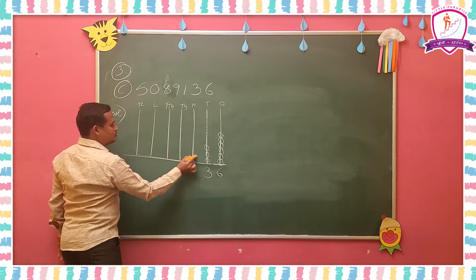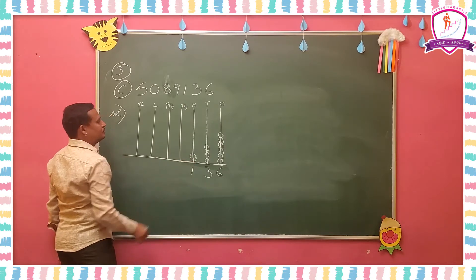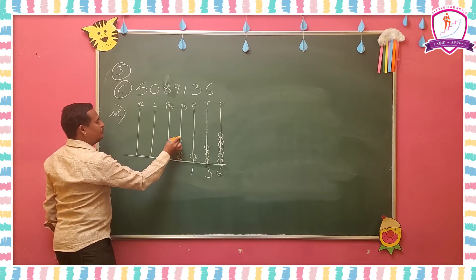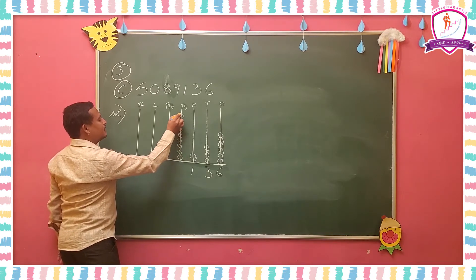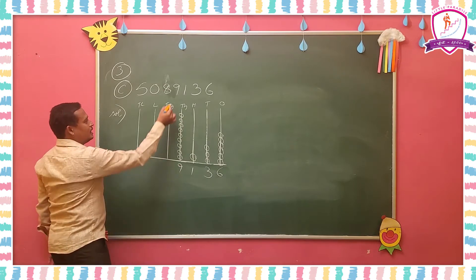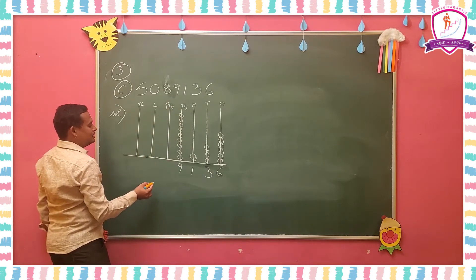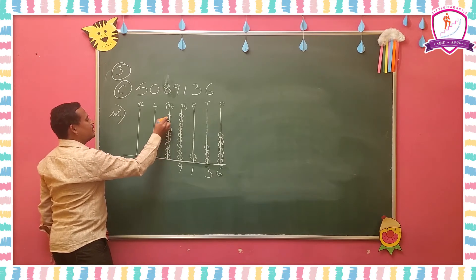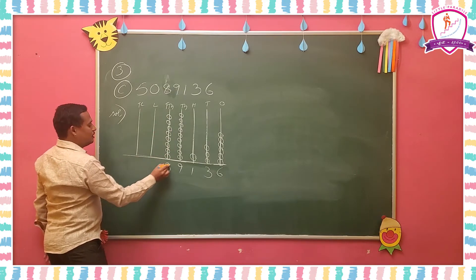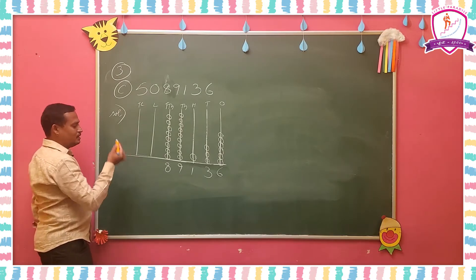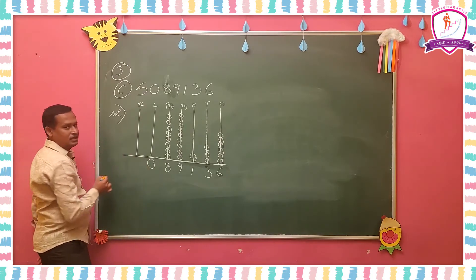In the thousands place, nine is there, so 1, 2, 3, 4, 5, 6, 7, 8, 9 bits you have to draw and write 9. In the ten thousands place, eight is there, so 1, 2, 3, 4, 5, 6, 7, 8 bits you have to draw and write 8. In the lakhs place, zero is there — no bits you have to draw; write 0.